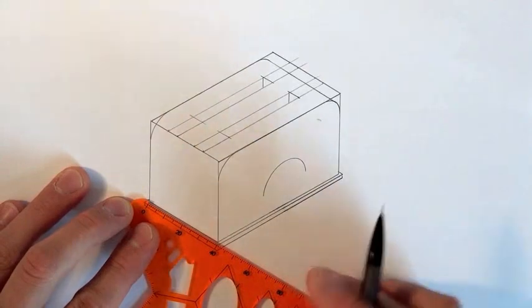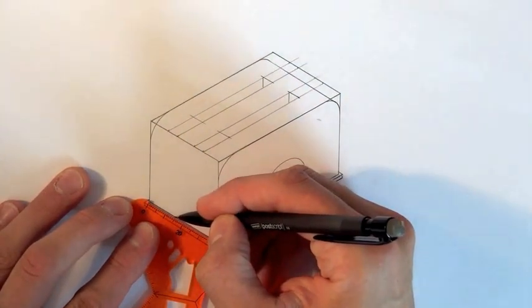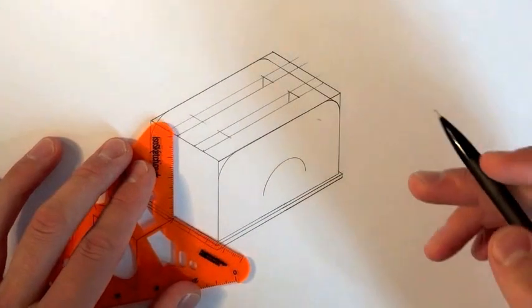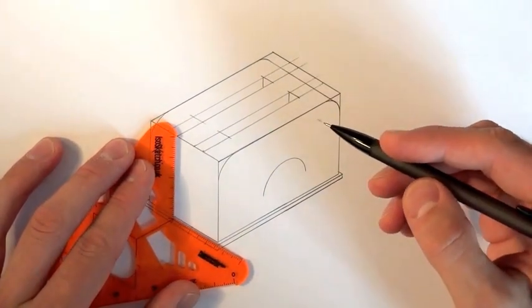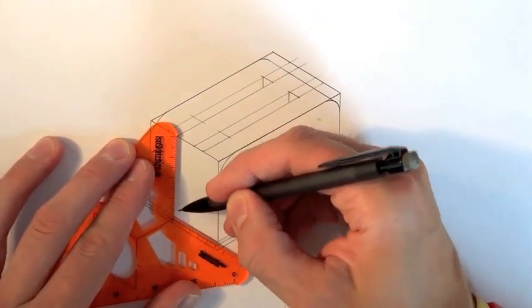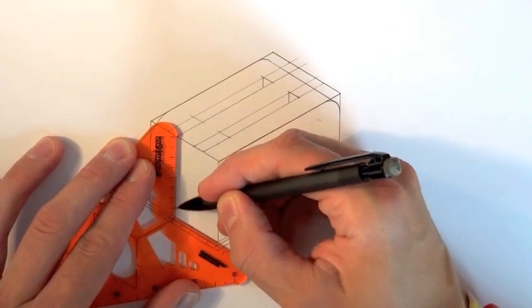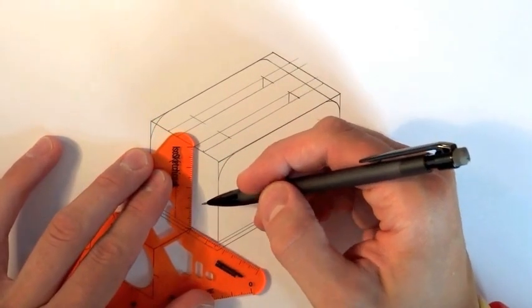Next up, we're going to create the slot where the lever is going to move up and down for the toaster. So again, we're just using the ruler to mark off an area that's a centimeter wide, 10 millimeters.